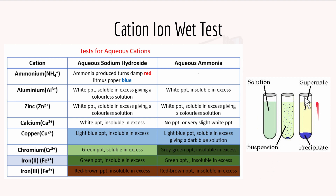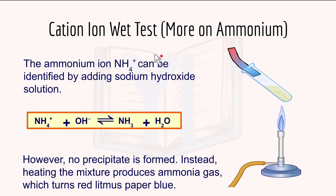You can see there are four different cations to test, and most of them produce a PPT which stands for precipitate - a solid that is produced. For more on ammonium: the NH4+ ion can be identified by adding sodium hydroxide solution. The reaction is NH4+ + OH- ⇌ NH3 + H2O. It's a reversible reaction. No precipitate is formed - instead, by heating, it produces ammonia gas which turns red litmus paper blue.